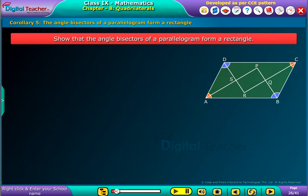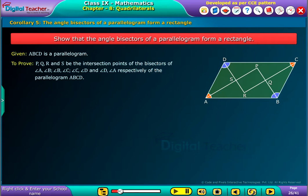Show that the angle bisectors of a parallelogram form a rectangle. Given, ABCD is a parallelogram. To prove, P, Q, R and S be the intersection points of the bisectors of angle A, angle B, angle C, and angle D respectively of the parallelogram ABCD.